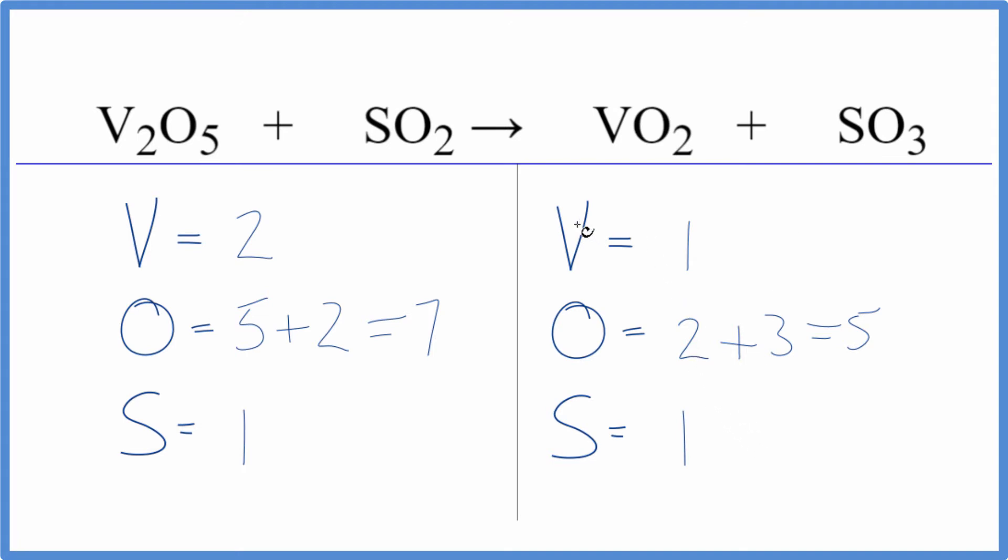We need to double the vanadium and add one more oxygen, but we have to put a 2 here to get the vanadium to double. So now we have 1 times 2. We have 2 of those. Those are balanced.